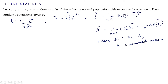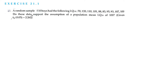Using this formula, we will solve questions 15 and 16 from exercise 21.1. The 15th question states: a random sample of 10 boys had the following IQs: 70, 120, 110, 101, 88, 83, 95, 93, 107, and 100. Do these data support the assumption of a population mean IQ of 100? The table value of t at 5% level of significance and 9 degrees of freedom is 2.262.